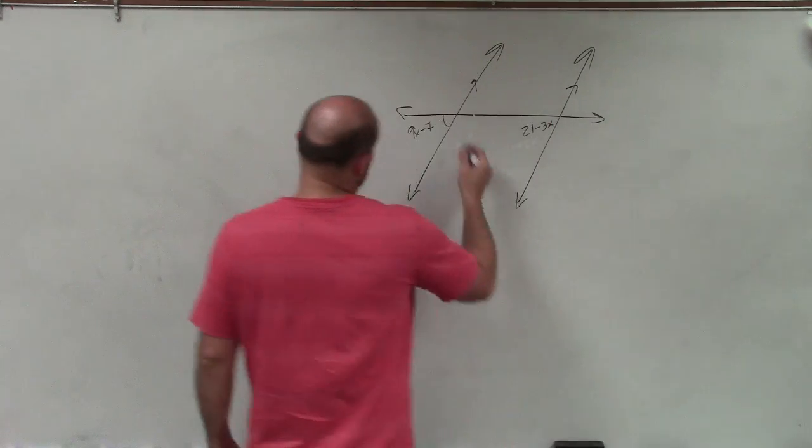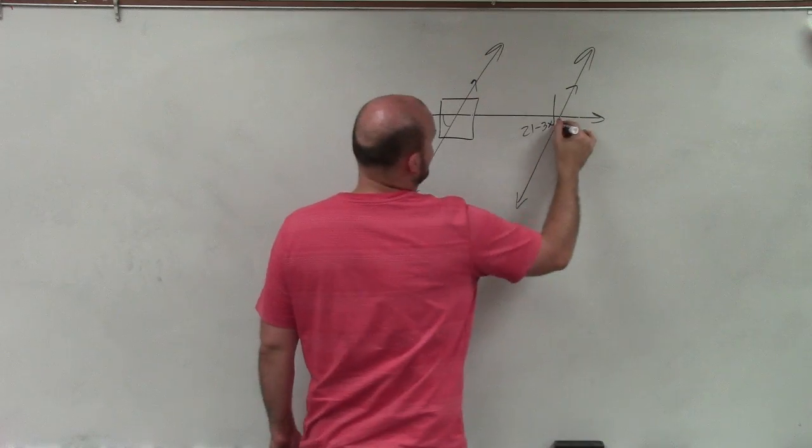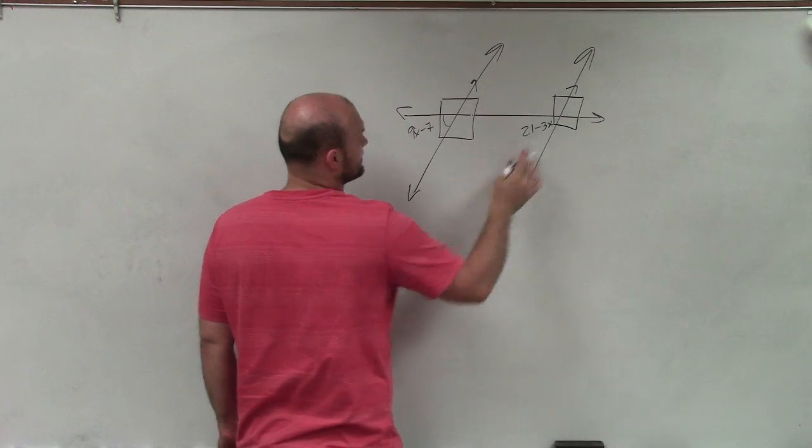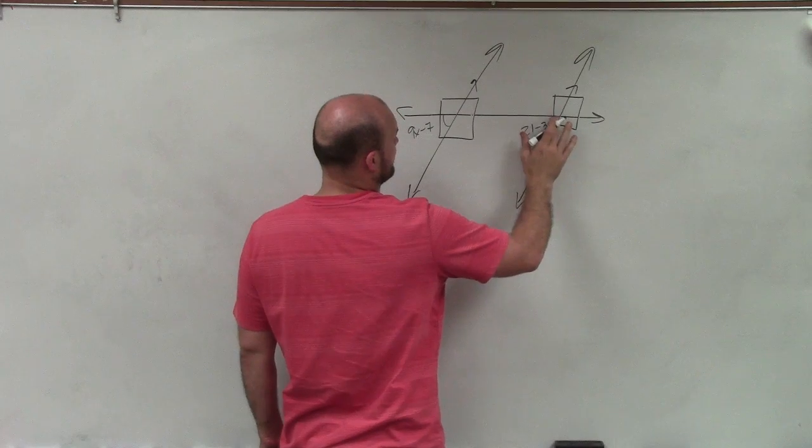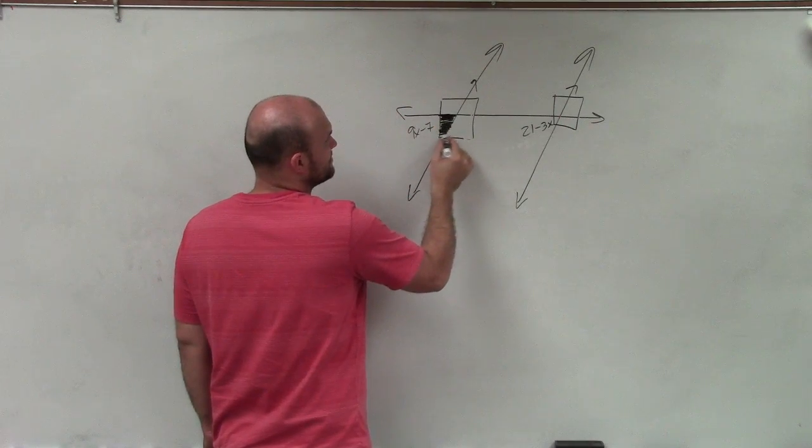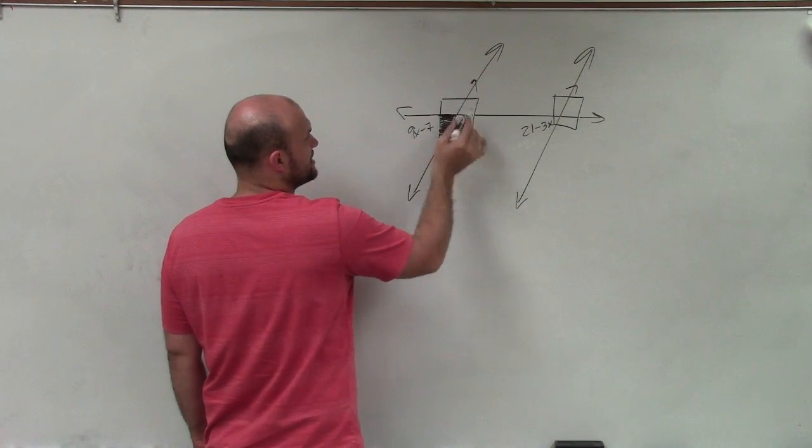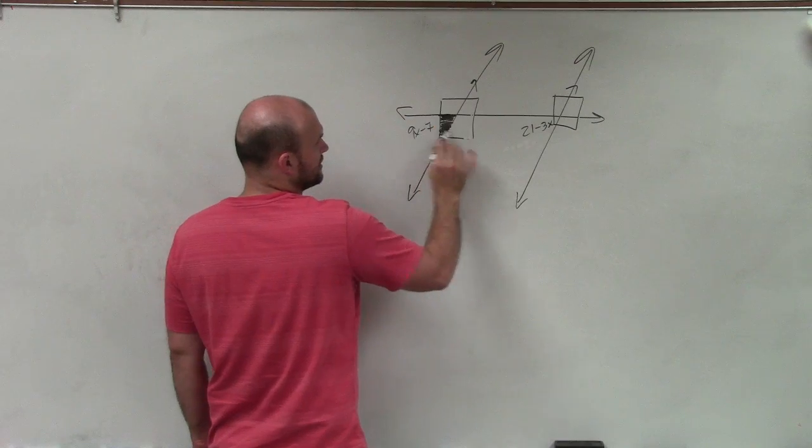Now for them to be corresponding angles, what we do is when we look at the intersection of the transversal with the parallel line, those angles have to be in the exact same position. You can see it here where the parallel line intersects the transversal, this angle is in the lower left-hand corner.